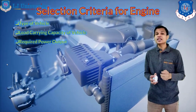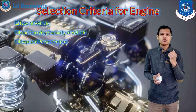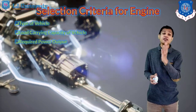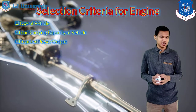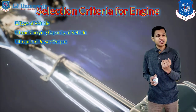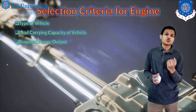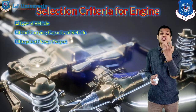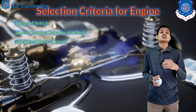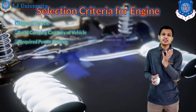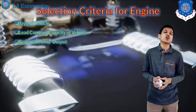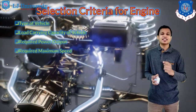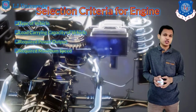The third thing is the required power output — how much power needs to be generated by the engine. The cubic centimeters of the engine will be decided based on the required power. Automatic transmission vehicles used for normal purposes will have comparatively lower power, while sports motorcycles will have a higher power demand. Based on this, we will decide the CC of the engine.